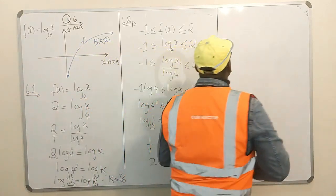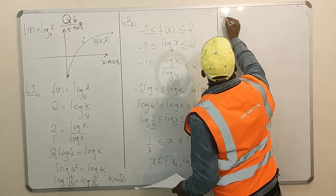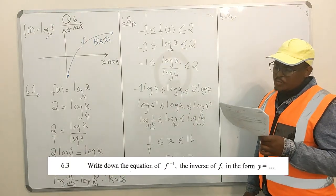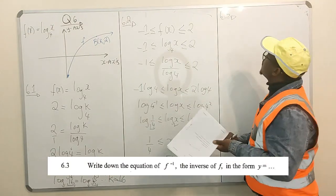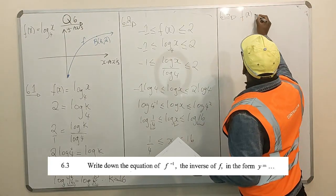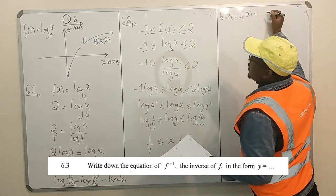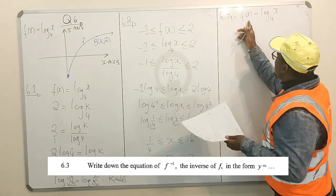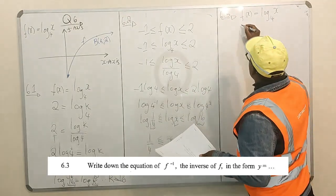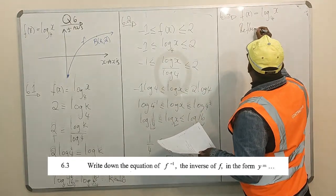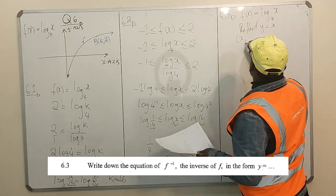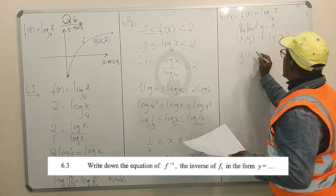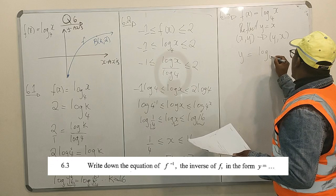Question 6.3: Write down the equation of the inverse of f in the form y equals. We have f(x) equals log₄(x). They want us to find the inverse of f. How do you find the inverse? You reflect upon the line y equals x. Your x and y become y and x, so x and y swap around.